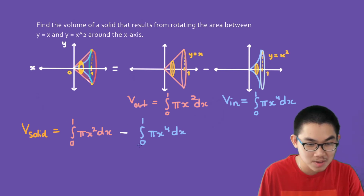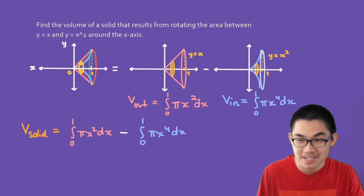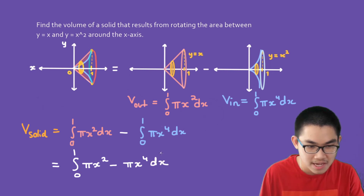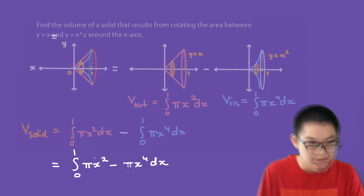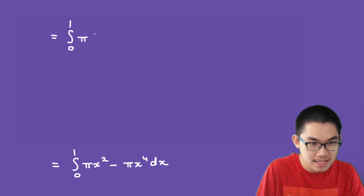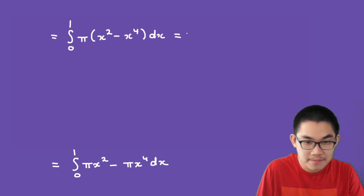Since both integrals have the same boundaries, we can combine them into one integral. This simplifies to the integral from 0 to 1 of (pi x² minus pi x⁴) dx. We can factor out pi, giving pi times the integral from 0 to 1 of (x² minus x⁴) dx.